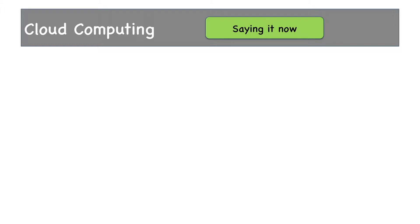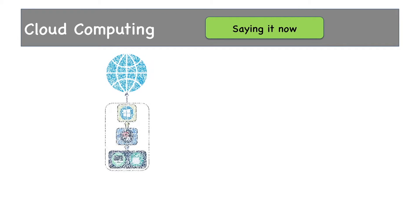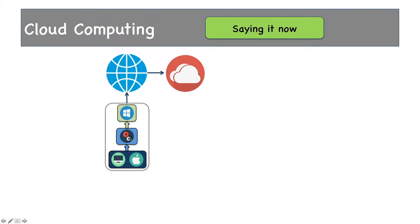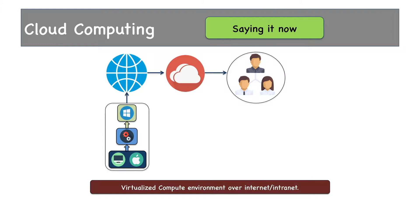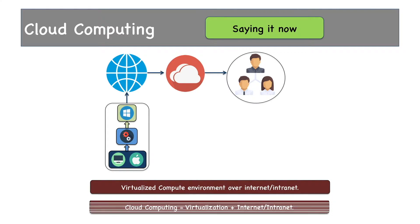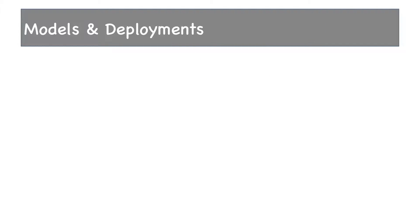Let's define cloud computing now. If you take the virtualized environment we just described — Windows OS on Mac using VMware — and put it over the internet and allow users to access the Windows OS remotely from their machines, you have essentially created a cloud computing environment. So my one-liner definition: cloud computing is a virtualized compute environment over internet or intranet. Cloud computing equals virtualization plus internet — a combination of both.